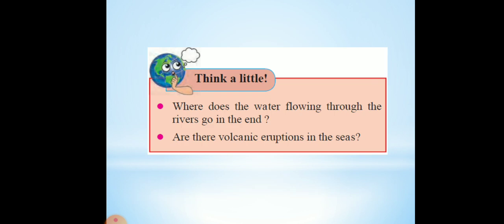Where does the water flowing through the river go in the end? It goes into the ocean — some sea or ocean the river finally meets. Are there volcanic eruptions in the sea? You know very well about volcanoes — when hot lava from the ground pushes out and gushes out, we call it a volcano. The same volcanic eruption occurs in the oceans as well. Now we will talk about volcanic eruptions from the ocean.